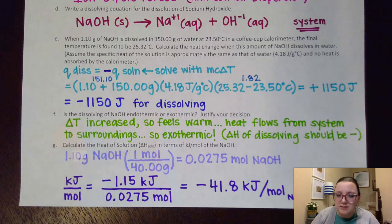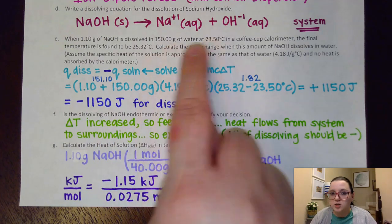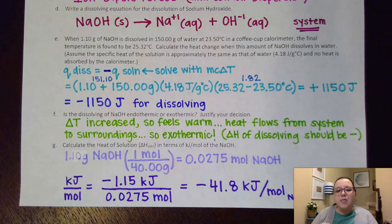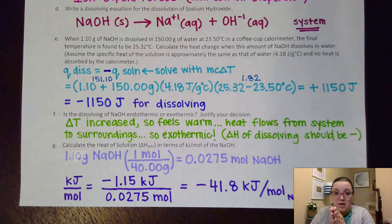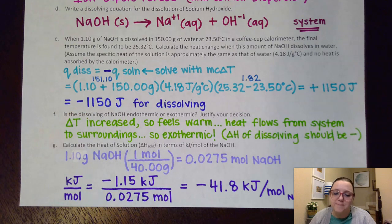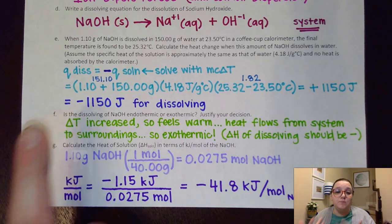If you're in doubt about that sign being correct, here's what you can ask yourself: is that process endothermic or exothermic based on the temperature change? If my hand was inside that calorimeter and the temperature is increasing, then it would feel warm to the touch, which means heat is going from the system as potential energy into the surroundings as kinetic energy. So that process should be exothermic, and therefore I should have a heat change that's negative — which is in fact what we got. Ask yourself every time: based on the temperature change, should the heat for the dissolving be positive or negative?